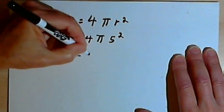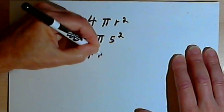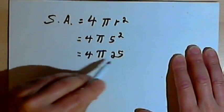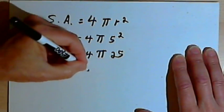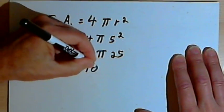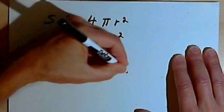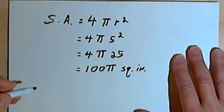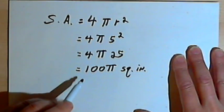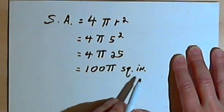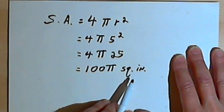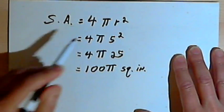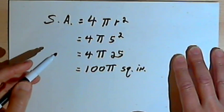5 squared is 25, so that will be 4 pi times 25. 4 times 25 is 100, so that's going to be 100 pi square inches. Since we're dealing with area, we're going to have a square unit, and we had inches, so it's going to be square inches. So that's basically all you need to know — this formula for the surface area of a sphere.